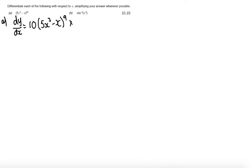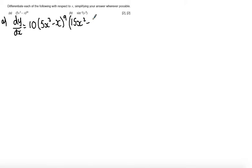I then need to multiply by the derivative of the inside function. Differentiating the inside function, I get 15x squared minus 1. And there is nothing further that can be done on that question.